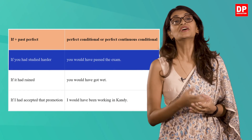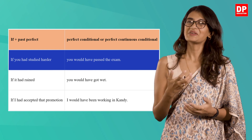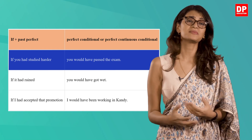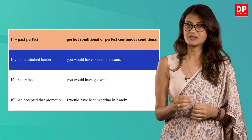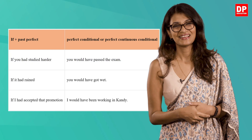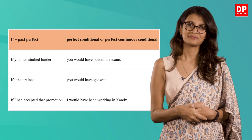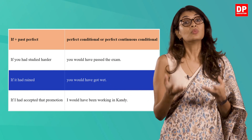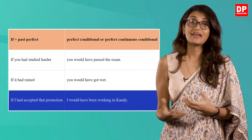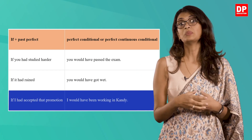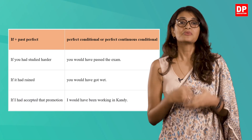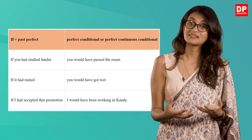'If you had studied harder, you would have passed your exam.' As you can see, both actions are in the past and refer to unreal, impossible situations. None of what is mentioned in the example happened in reality, but it could have been possible. Another example: 'If it had rained, you would have got wet.' And: 'If I had accepted that promotion, I would have been working in Kandy.' All of these examples present unreal situations in the past that could have happened.